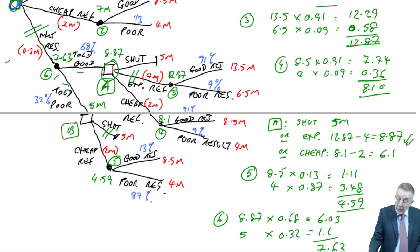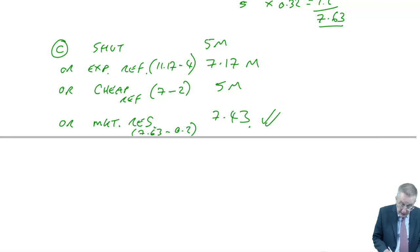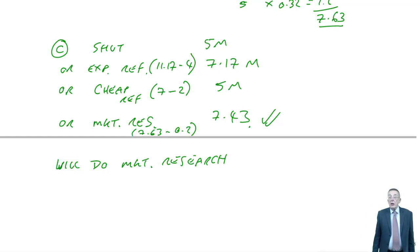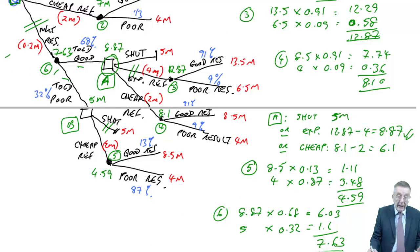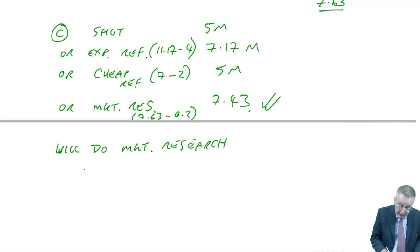And if we shut, we get 5 million. Or the second option, was to do the expensive refurbishment. Expensive refurbishment, we pay out 4, and get back an expected 11.17. And so a net 7.17. Or we do the cheap refurbishment. The cheap refurbishment, we pay out 2, and get back 7.17, a net 5 million. Or finally, we do market research. And market research, we pay out 0.2, and get back 7.63. It's our choice, and we'll pick whichever is the best of those four. The best is in fact to do the market research. 7.43. And so there we are.